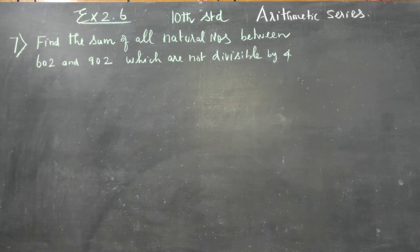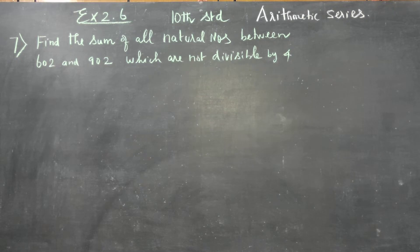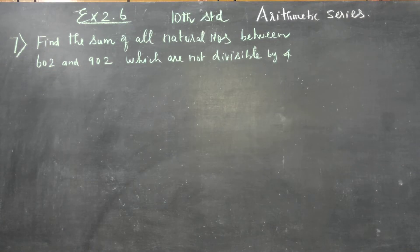Dear 10th standard students, in exercise number 2.6, sum number 7: find the sum of all natural numbers between 602 and 902 which are not divisible by 4.